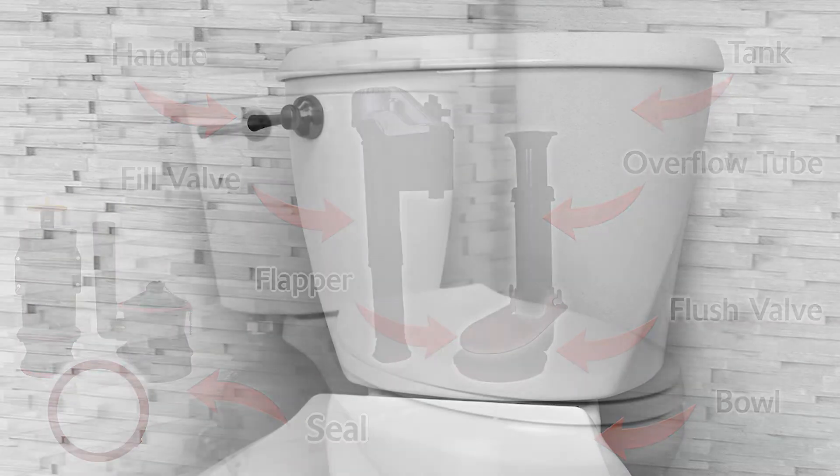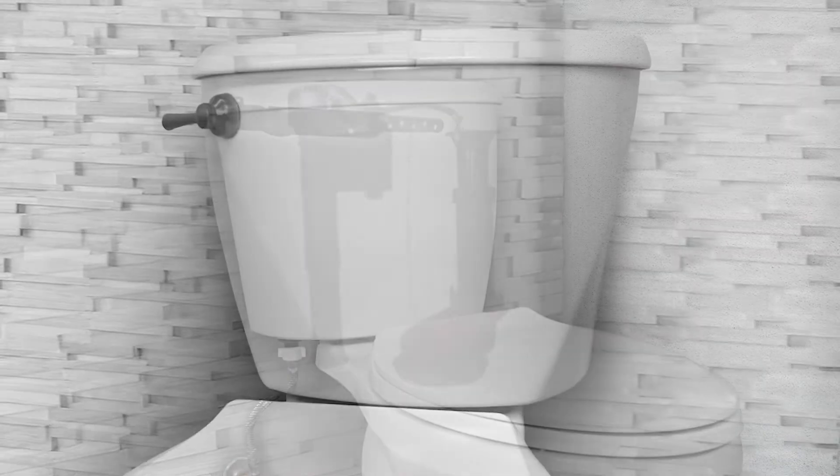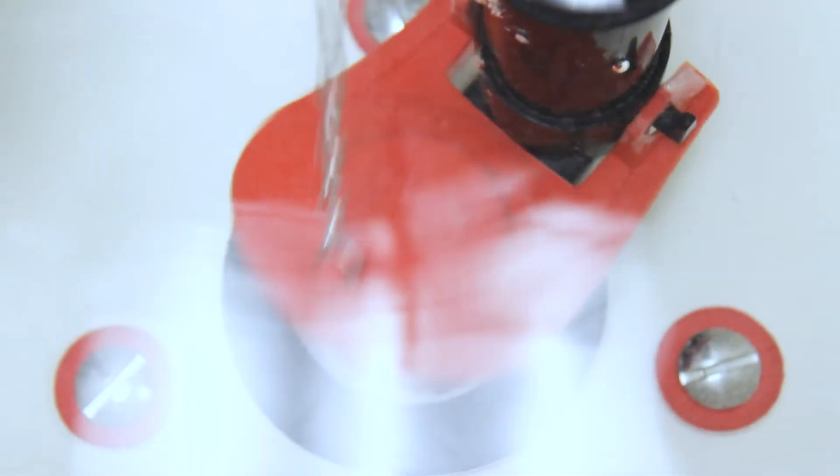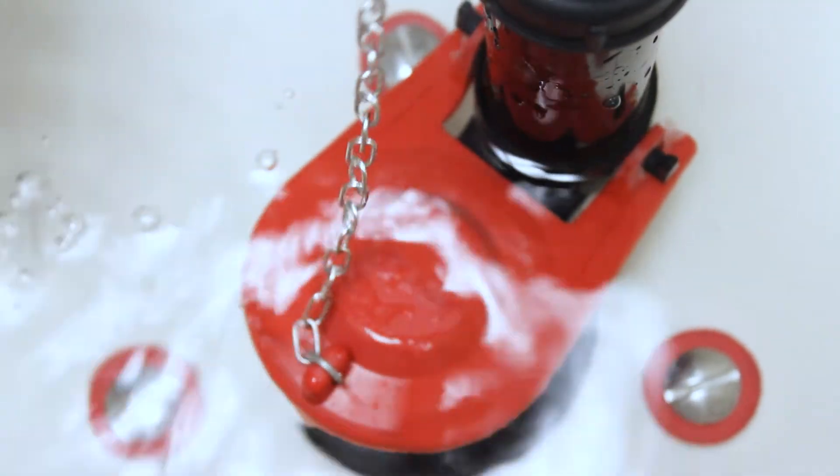What happens when a toilet is flushed? When the toilet handle is pushed, the flush lever inside the tank pulls up on a chain connected to the flapper or seal. While the flapper is open, water inside the tank is released through the flush valve and into the bowl.